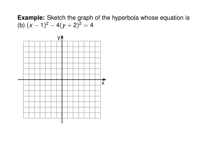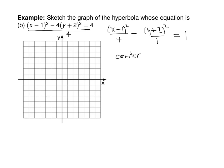For the off-centered hyperbola, divide by 4 to get (x minus 1)²/4 − (y + 2)²/1 = 1. The center is at (1, −2). From the center, go left and right 2, and up and down 1 to draw the box, then sketch the asymptotes through the corners. Because x squared is the positive term, this is a horizontal hyperbola opening left and right, with vertices at (3, −2) and (−1, −2).